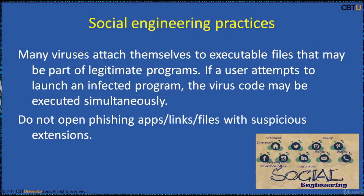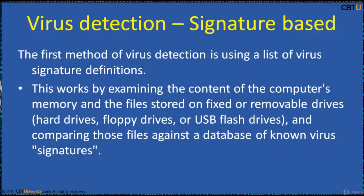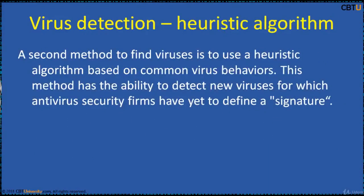Many viruses attach themselves to executable files that may be part of legitimate programs. If a user attempts to launch an infected program, the virus code may be executed simultaneously. Do not open phishing apps, links, or files with suspicious extensions. The first method of virus detection is using a list of virus signature definitions. This works by examining the content of the computer's memory and files stored on fixed or removable drives, and comparing those files against a database of known virus signatures. A second method is to use a heuristic algorithm based on common virus behaviors, which has the ability to detect new viruses for which anti-virus security firms have not yet defined a signature.